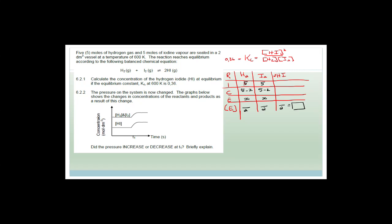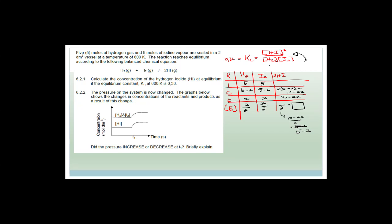So looking at the change: this is what we started with, this is what we ended with, and this is how much we used — five minus X. That means we must have made double that, so two times (five minus X), which is 10 minus 2X. So we know we must have made 10 minus 2X of hydrogen iodide. That means the concentration at equilibrium is (10 minus 2X) over 2, which is five minus X. So the concentration of hydrogen iodide at equilibrium is five minus X, the concentration of hydrogen is X/2, and the concentration of iodine is X/2.